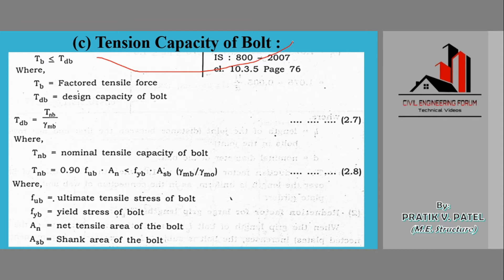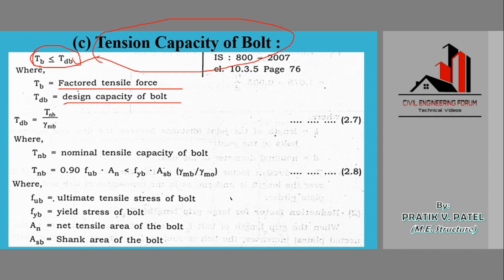In order to find the tension capacity of the bolt, we have the condition: Tb should be less than Tdb, where Tb is the factored tensile force and Tdb is the design tension capacity of the bolt. The design capacity of the bolt should be greater than the factored tensile force — anything that is factored includes a factor of safety, so it should be kept less than the design capacity.